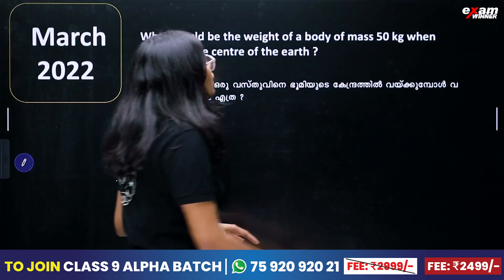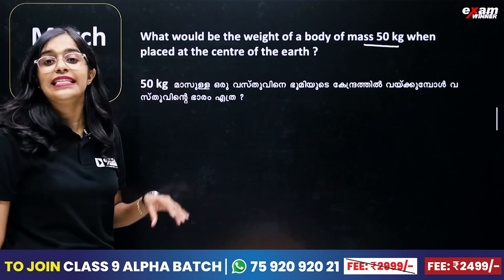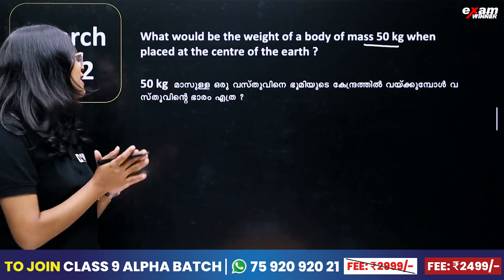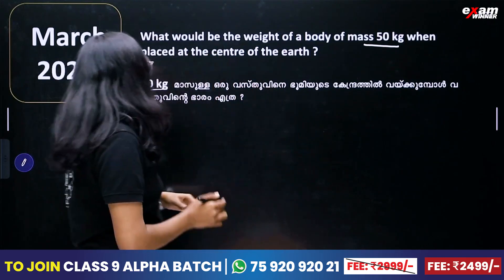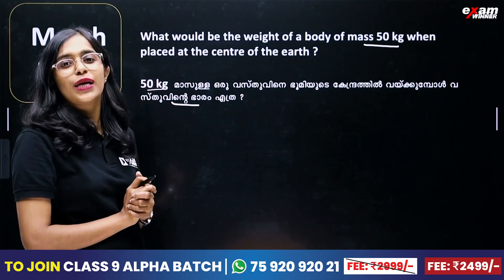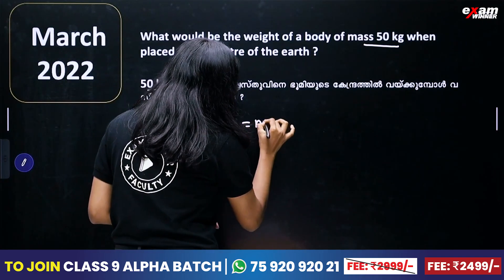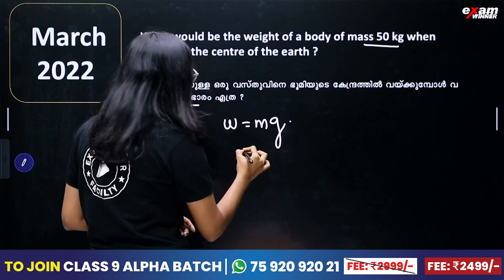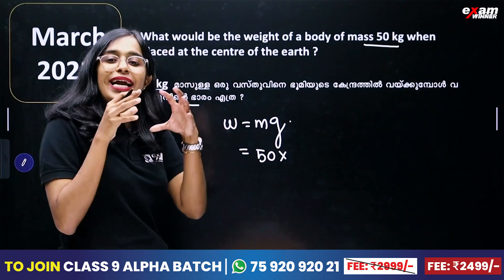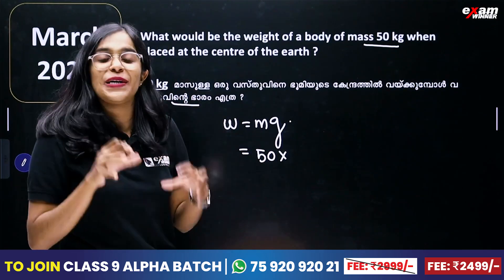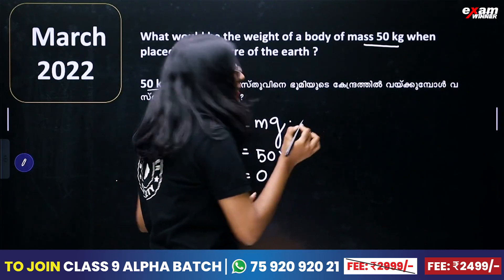What would be the weight of a body of mass 50 kg when placed at the center of Earth? In a mass of 50 kg, our formula is: weight is equal to M into G. We must consider 50 kg. What is acceleration due to gravity at the center? The weight is equal to zero.